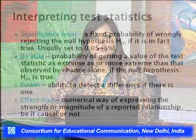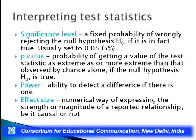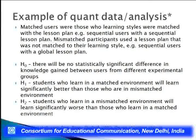Interpreting test statistics requires four basic things: first, the significance level — a fixed probability of wrongly rejecting the null hypothesis if it is true, usually set at 5%; second, the p-value — the probability of getting a test statistic as extreme as or more extreme than observed by chance alone, assuming H0 is true; third, power — the ability to detect a difference if there is one; fourth, effect size — the numerical value expressing the strength or magnitude of a reported relationship, causal or not.